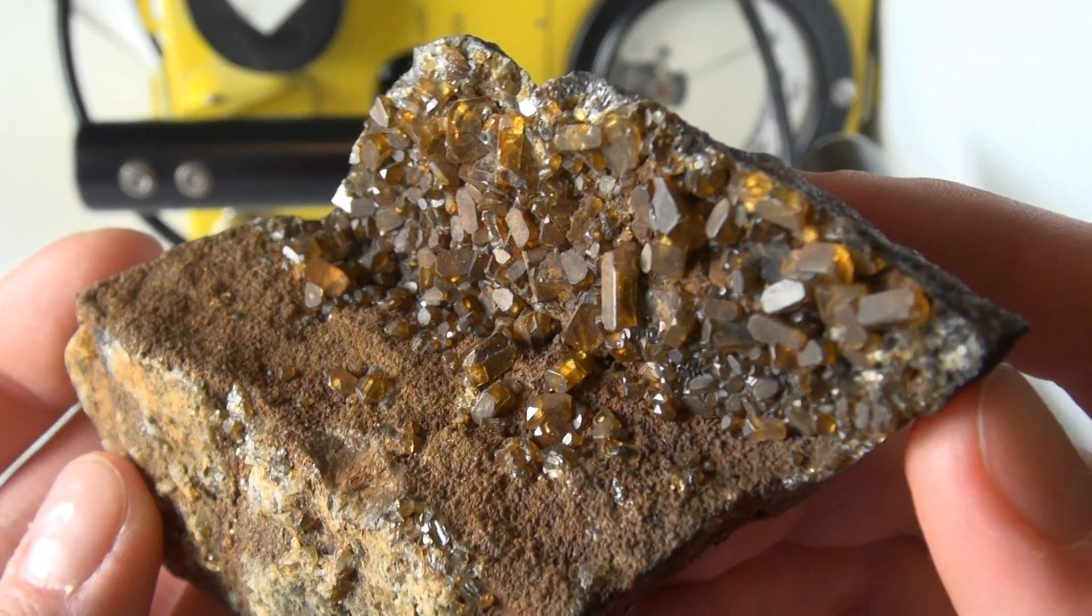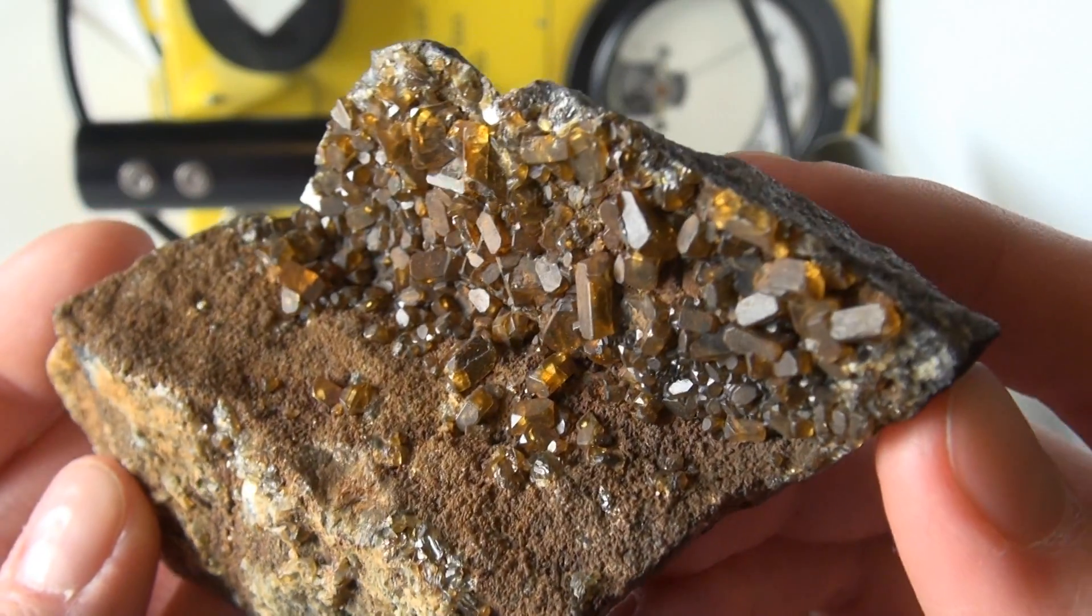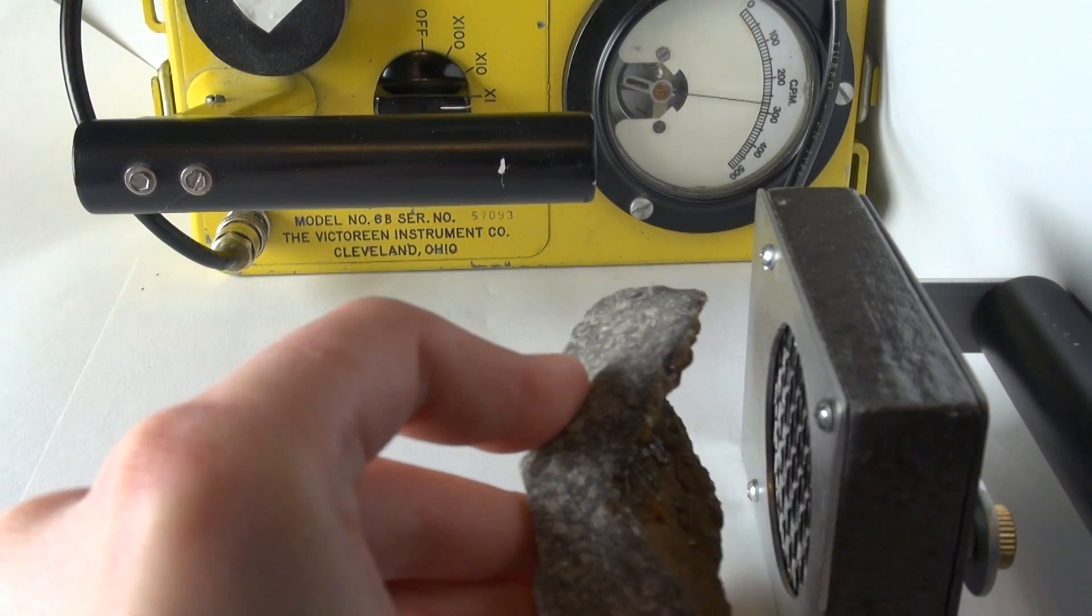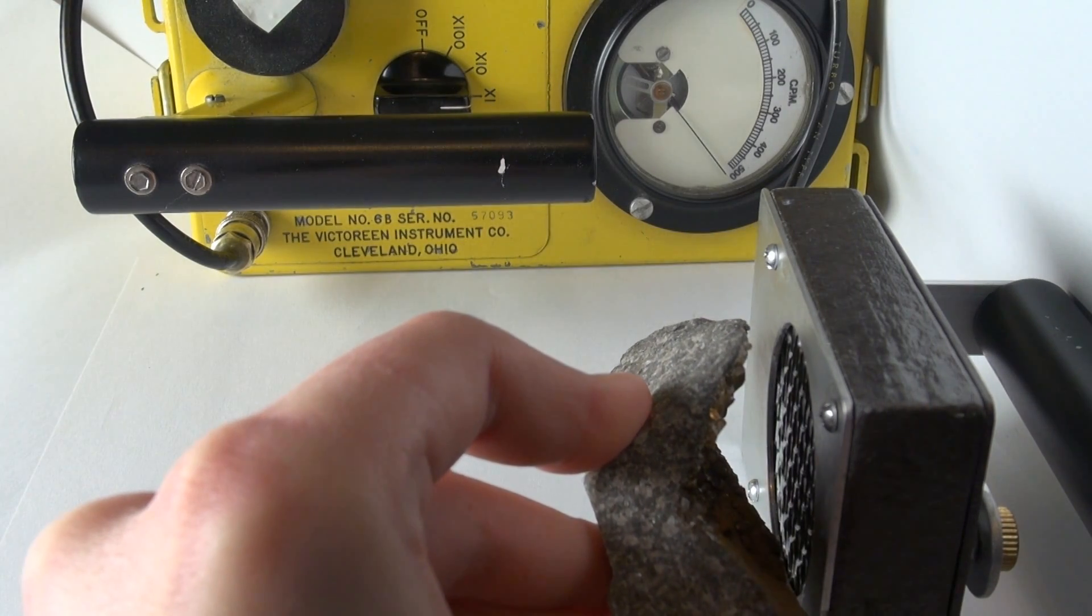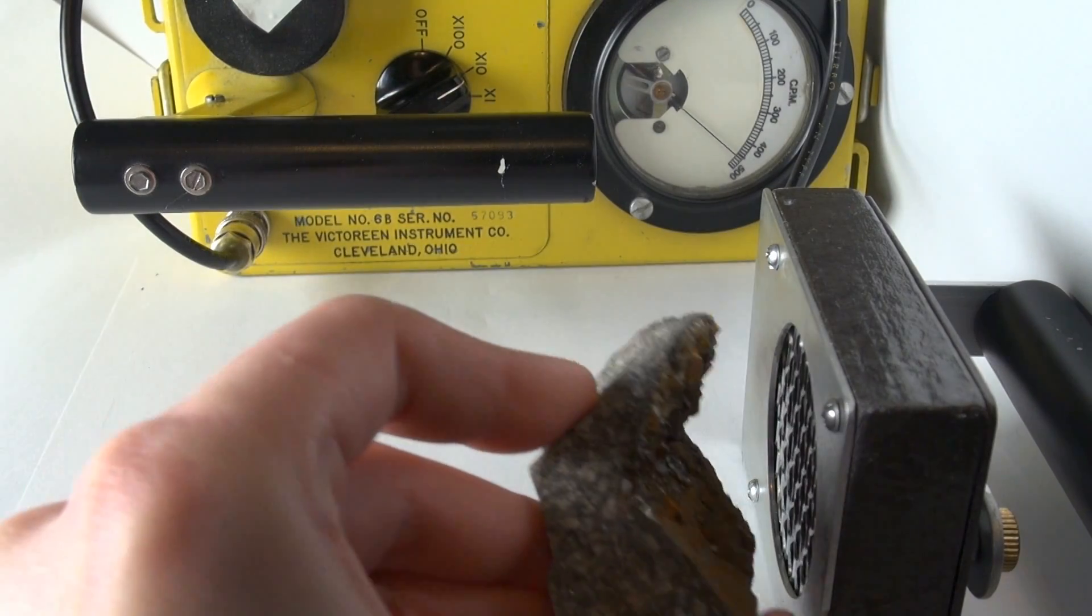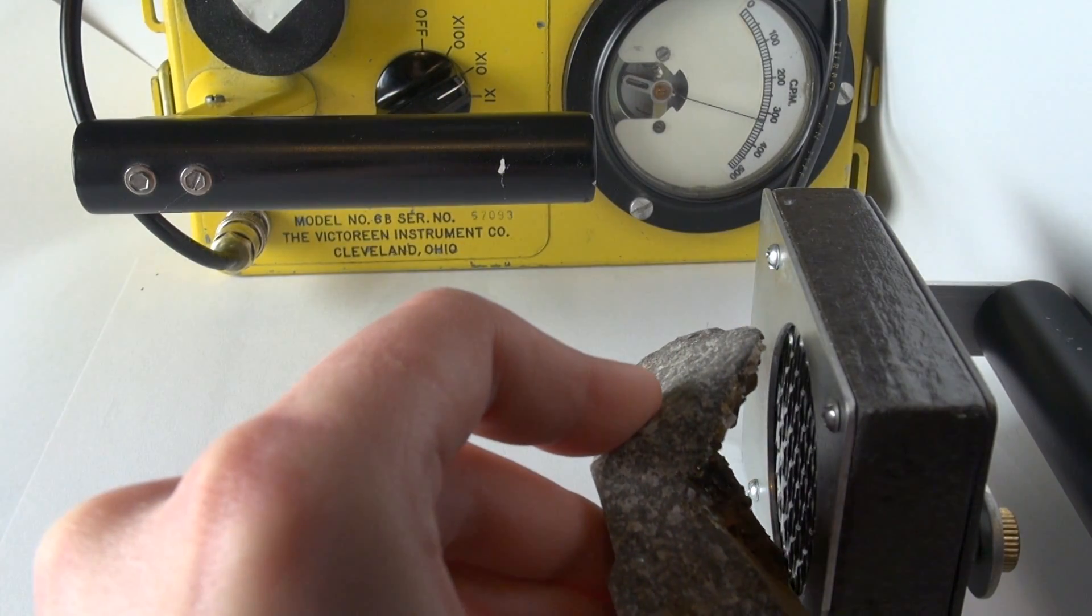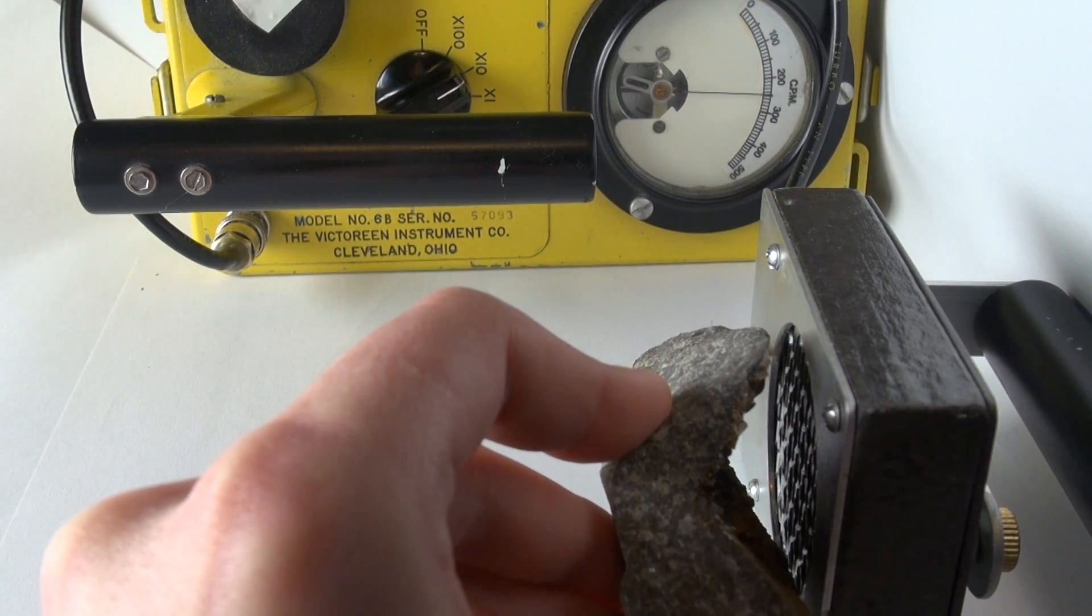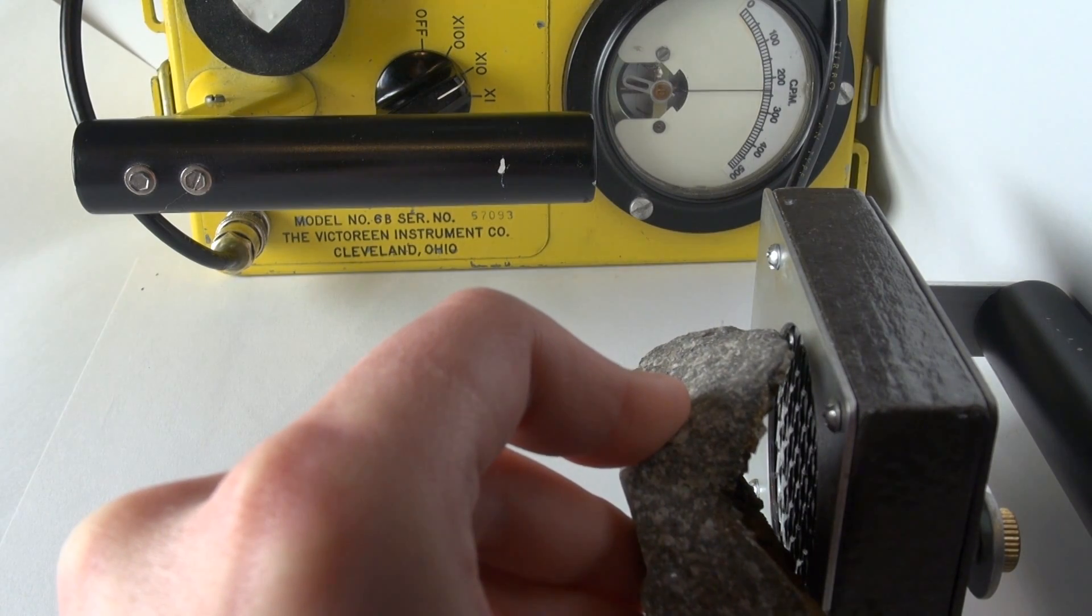So let's check out these beautiful honey colored crystals of barite with the pancake detector. And you can see it's so radioactive that it even maxes out the initial scale, so I have to switch it to times 10. That's about 2000 counts per minute from this.